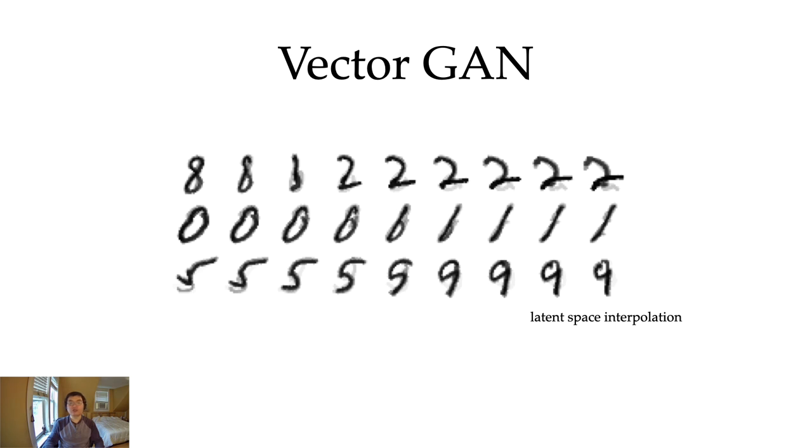Because now we can sample digits in the latent space, we can also interpolate them. If you ever wonder what the integer between zero and one looks like, here it is.